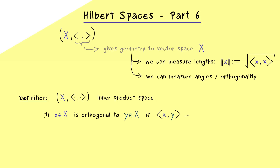The inner product of x with y has to be zero — simply as that, this is what we mean by orthogonal. The common way to write this is to use the perpendicular sign between the two vectors. You should remember: this symbol just means by definition that the inner product is zero. And obviously the term orthogonal is symmetric in both inputs, so we can simply say x and y are orthogonal.